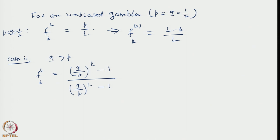Now let us consider case 2, where the person has a tendency to lose basically every time he bets for some reason. Let us say q is greater than p, probability of losing is more than the probability of winning. Then we can write f_k,L equal to (q/p)^k minus 1 divided by (q/p)^L minus 1.